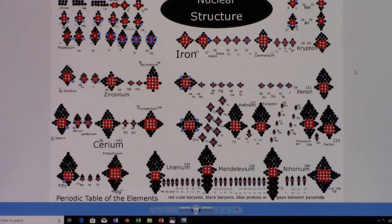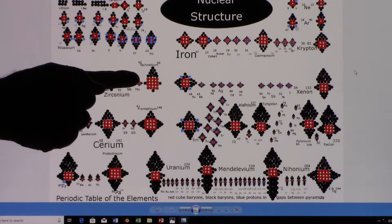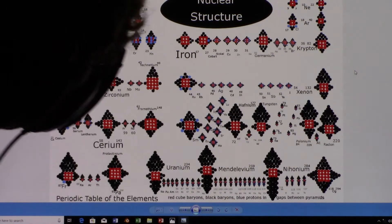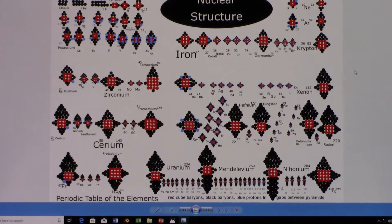Any element that has four layers in the cube is extremely radioactive, and those are technetium, promethium, protactinium, and oganesson.